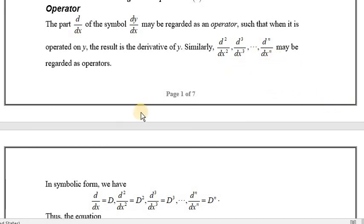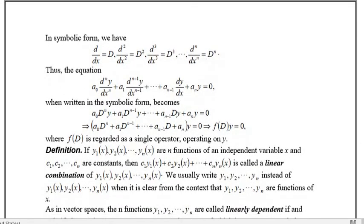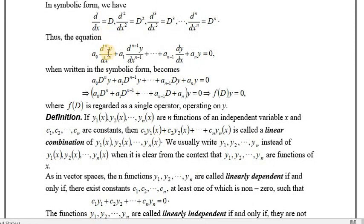So in symbolic form we have d upon dx as D. Thus the equation can be written as an dn y plus an-1 dn-1 y and so on. So this one is denoted by dn y, one less degree dn-1 y. When y is common, this y has been taken in common. So you will see it in this type of function of D and y. Sometimes we divide y from both sides, so it's separate.